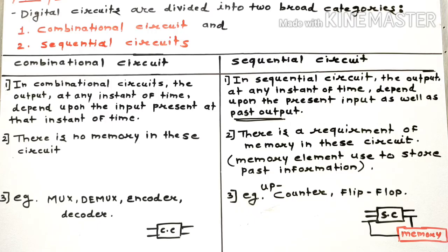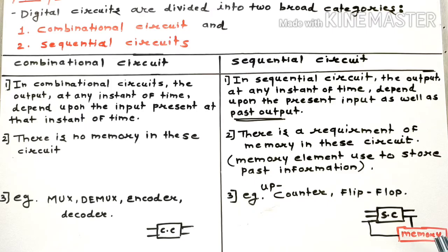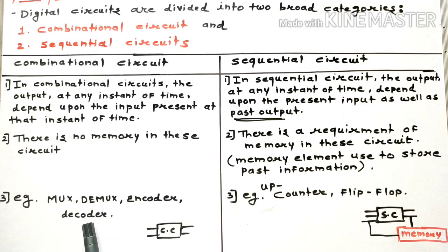So in case of a combinational circuit, the output depends upon the present input — that's it. But in case of a sequential circuit, the output is not only dependent upon the present input but also upon the past output. With the help of memory, we store the past information and feed it as input to the sequential circuit. Examples such as mux, demux, encoder, and decoder come under the category of combinational circuits.